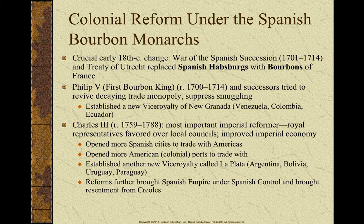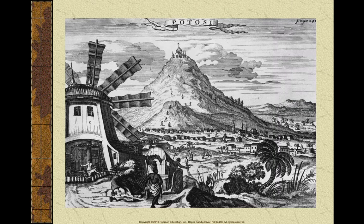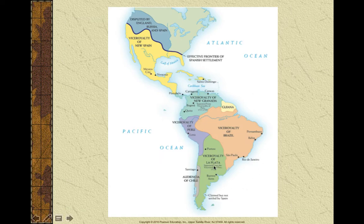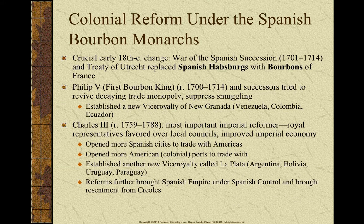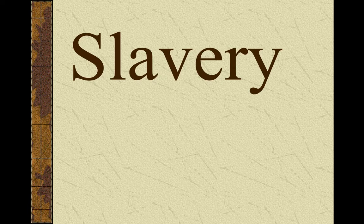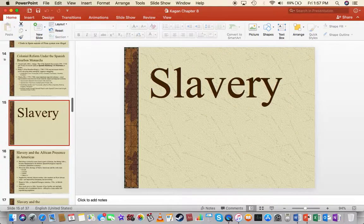Charles III will garner the resentment of the Creoles. Remember that social structure we talked about previously in Chapter 2 — he will bring about resentment of pretty much anybody who is not a Peninsulares at the top of that social structure. He also established a new Viceroyalty of La Plata, right down here — it pretty much encompasses current-day Argentina. I'll end that video and next throw up a video talking a little bit about slavery, because we can't talk about this transatlantic trade and economy without slavery.